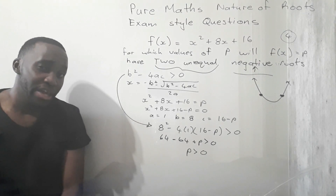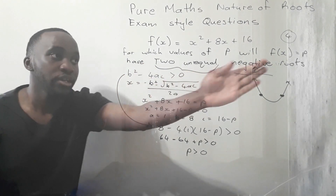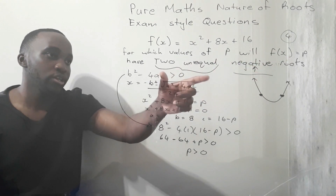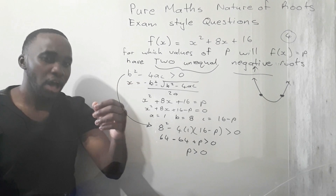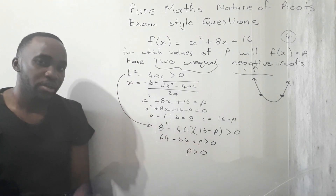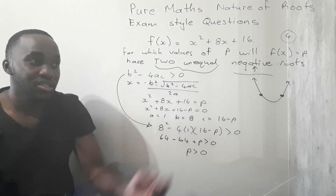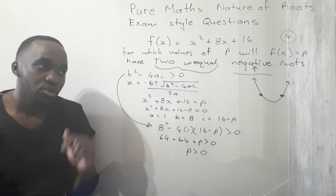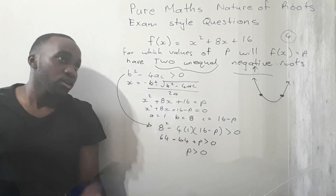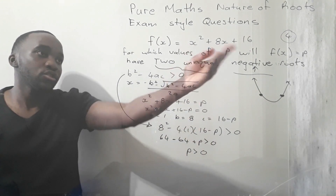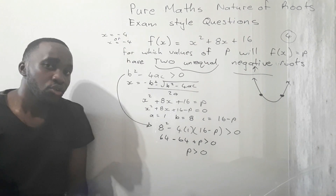If you stop here you may get three marks, because for two unequal roots p > 0 is correct. However, for cases where the roots always need to be negative, we need to think a bit deeper. If you work out the solutions in your calculator using the quadratic formula, you get two solutions that are both equal to negative four.